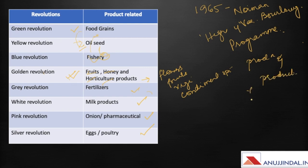Remember, green revolution is only for food grains, and not for vegetables, fruits, or other food products. It was done to increase production and make India self-sufficient in food grains, thus improving its sustainability and the income of the farmers.